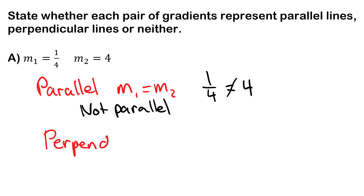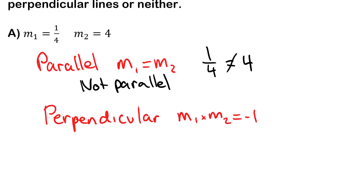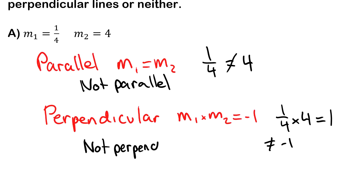Next we test for perpendicular. For perpendicular lines, m1 times m2 should equal negative one. In this case, one over four times four equals one, which does not equal negative one, so the lines are not perpendicular either. Since it failed both tests, we say that these lines are neither parallel nor perpendicular.